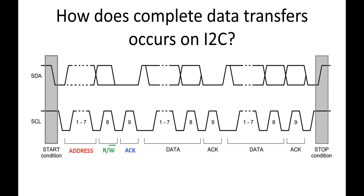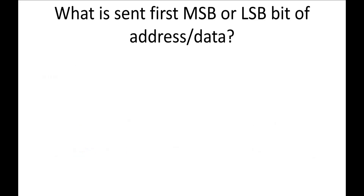I hope the complete data transfer on I2C bus is now understood. If you have any query, please write it down in the comment section. Now let us move to the next question: what is sent first — the MSB or LSB bit of address and data? Since I2C communication is a serial communication, the receiver side should know whether the bit coming first is the MSB or LSB.